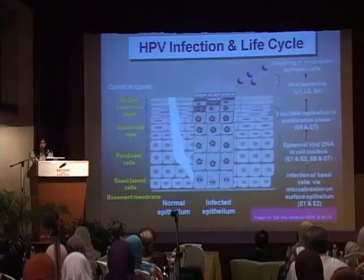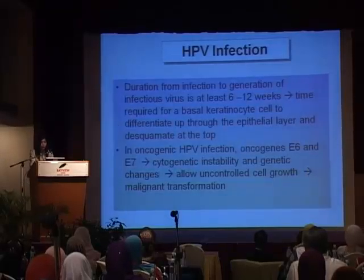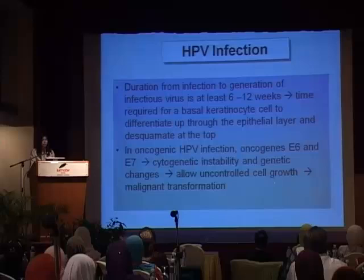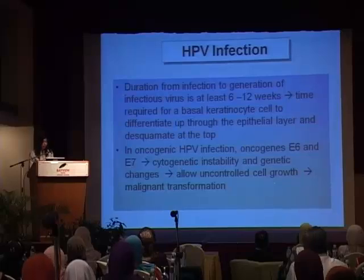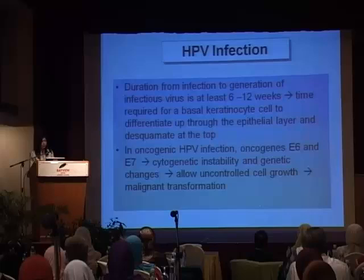The duration from infection to generation of infectious virus can take at least 6 to 12 weeks — the time required for a basal keratinocyte cell to differentiate up to the epithelial surface layer. For oncogenic HPV infection, oncogenic proteins E6 and E7 cause subtle genetic instability and genetic changes in the cells, which subsequently allow uncontrolled growth of the cell.